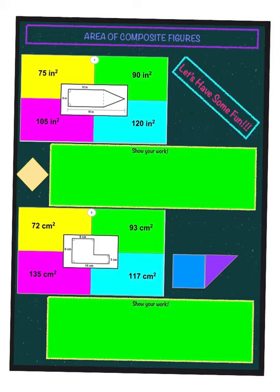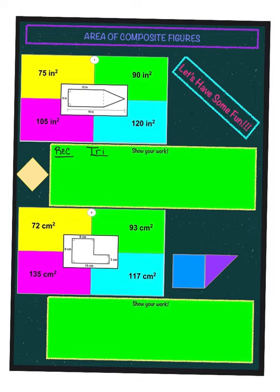We are going to go over area of composite figures. When you're given a composite figure, the first thing you're going to do is decide what shapes you see. In this first shape, it's actually divided for us with a dotted line, so we have a rectangle and a triangle. You need to find the area of both shapes and then add them together to get the total area. Always write the formula — you're less likely to make a mistake.